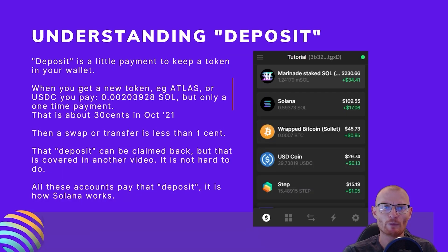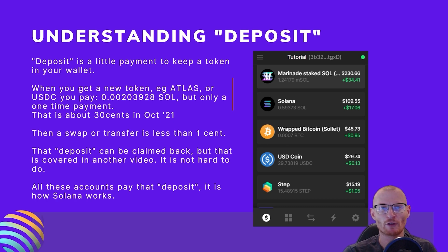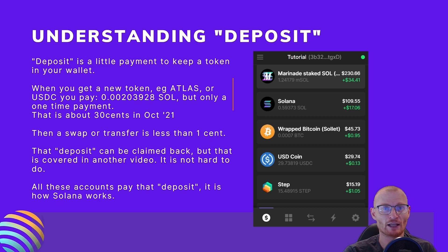Understanding Deposit. A deposit is a small payment to keep a token in your wallet. When you get a new token, e.g. ATLAS or USDC, you pay 0.00203928 SOL as a one-time payment. That's about 30 cents as of October 2021. Then a swap or transfer is less than 1 cent. That deposit can be claimed back, but that is covered in another video. It is not hard to do. All token accounts pay that deposit — it is how Solana works. As an example, these five tokens contain about $1.50 worth of deposits, 30 cents in each of them.